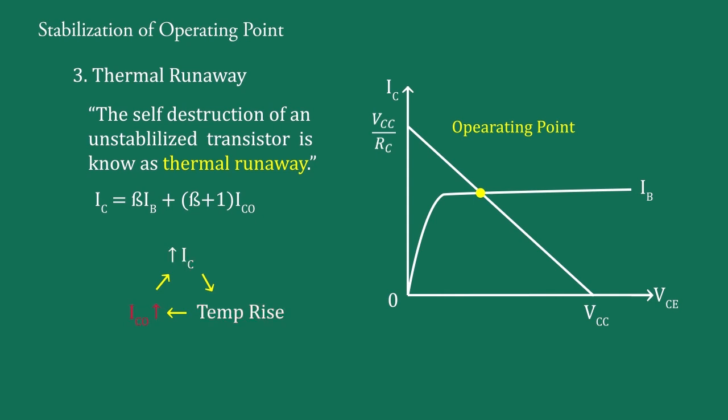This causes the transistor to burn out, which is called thermal runaway. It is self-destruction because the temperature increases by flow of current IC, and that's why ICO increases. Due to this cyclic process, more and more heat is generated at every cycle, and it destroys the transistor if it is not stabilized.